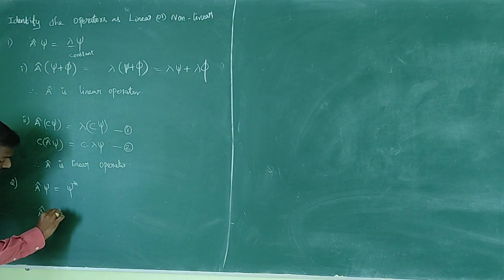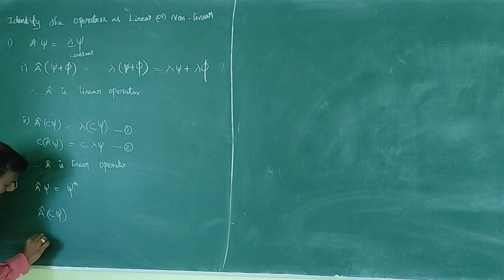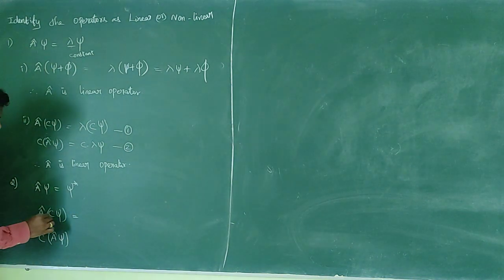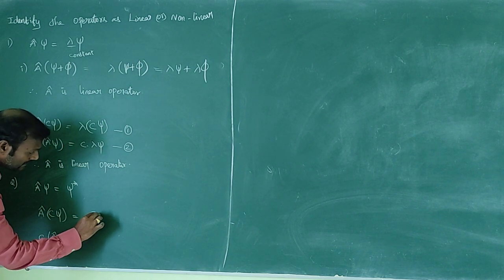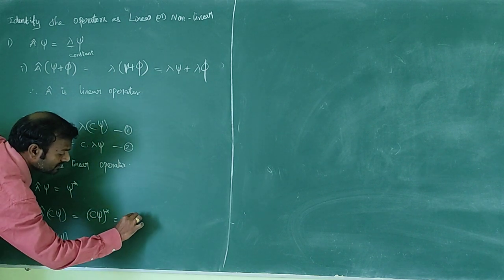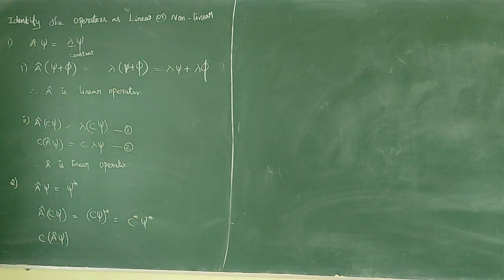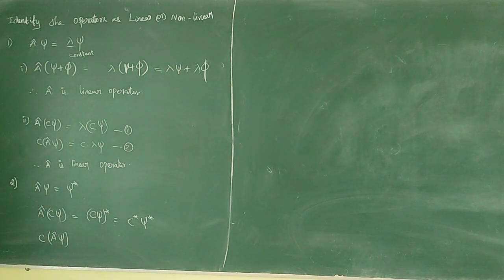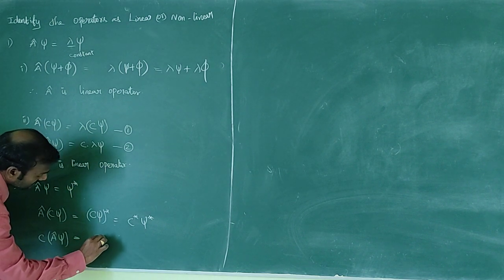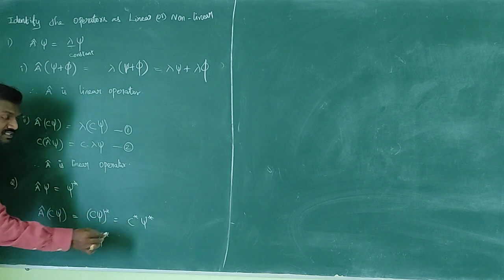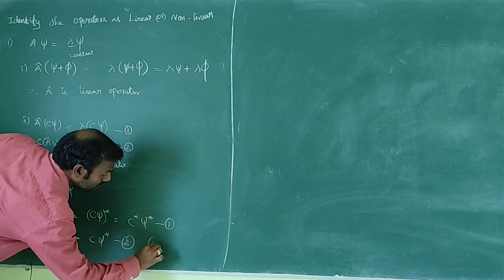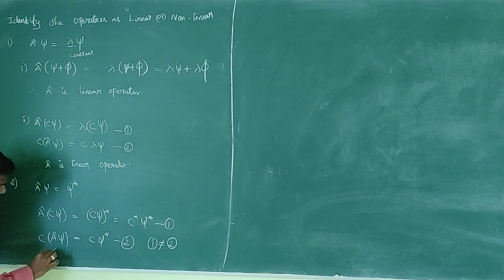For A-cap(C·ψ): we operate to get (C·ψ)* which equals C*·ψ*. From the other side: C·A-cap(ψ) = C·ψ*. Now C and C* are different — C is a complex constant and C* is its complex conjugate, so they are not equal. Therefore equations 1 and 2 are not equal. Therefore A-cap is a non-linear operator.